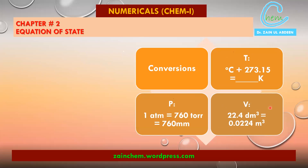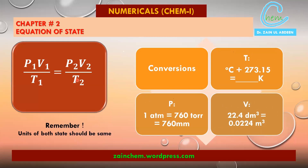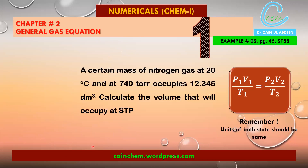Most numericals ask you to find volume, so keep the formula in mind. The numerical in front of us reads: a certain mass of nitrogen at 20 degrees centigrade and 740 torr occupies 12.345 decimetre cube. We are asked to calculate the volume at STP conditions.